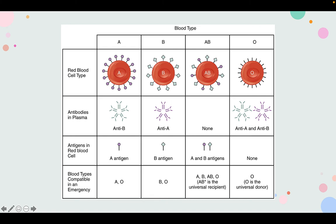Type O won't be recognized by AB — AB doesn't care. Type B is only looking for anti-A antigens, and those aren't on O. Type A is only looking for anti-B antigens, and those aren't on O either. So O can be donated to anybody, but O cannot receive from anybody except O.